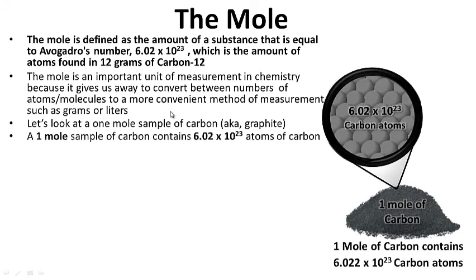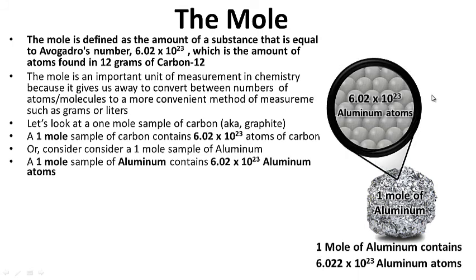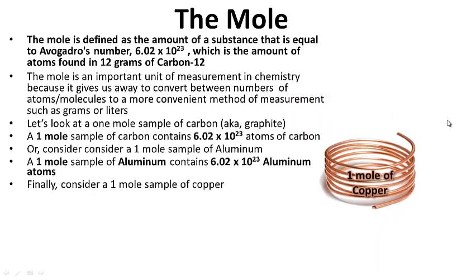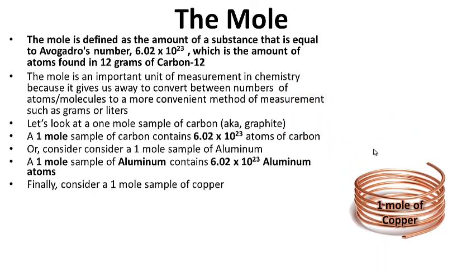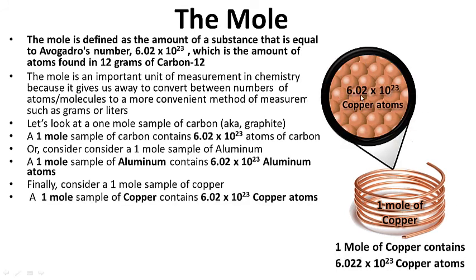A one-mole sample of carbon contains 6.02 times 10 to the 23rd atoms of carbon. Consider also a one-mole sample of aluminum — it contains 6.02 times 10 to the 23rd aluminum atoms. And finally, a one-mole sample of copper contains 6.02 times 10 to the 23rd copper atoms. So one mole of any substance contains 6.02 times 10 to the 23rd atoms.